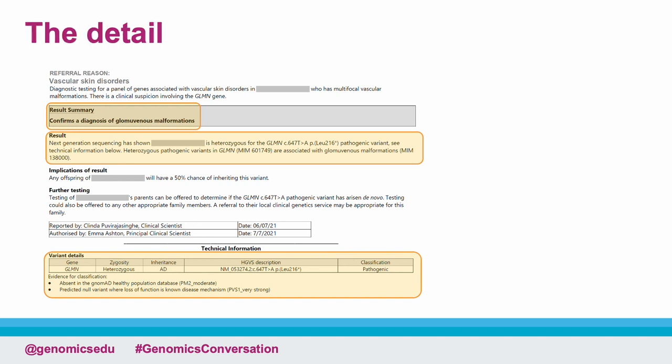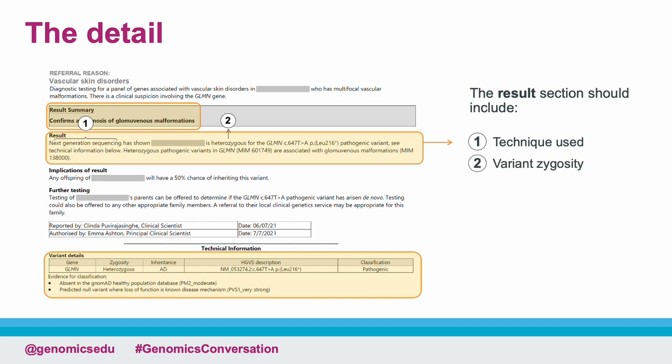Let's have a look at the detail about the test result. This will include: 1. The genetic technique used — in this case, next generation, otherwise known as massively parallel sequencing. 2. Whether the variant has been detected in the heterozygous, homozygous or hemizygous state.